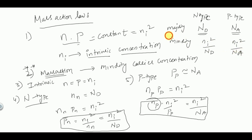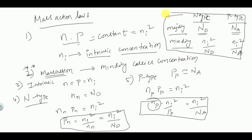These are the values of majority and minority carrier concentration in N-type and P-type semiconductors — very important formulas that you must remember. This concludes mass action law and its application in finding majority and minority carrier concentrations. In the next lecture, we will discuss drift and diffusion currents. Please stay tuned and consider subscribing. Thank you.